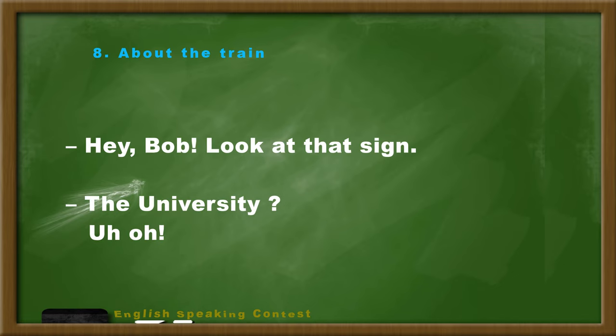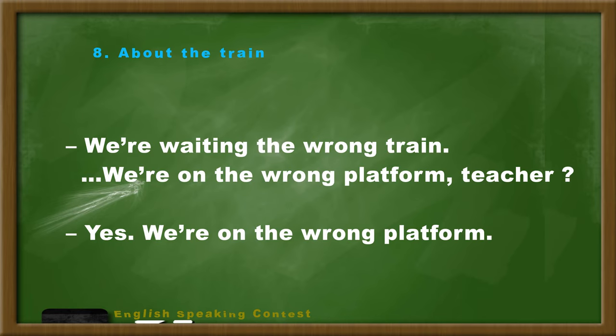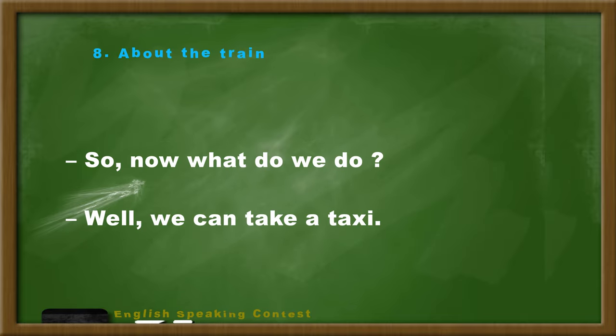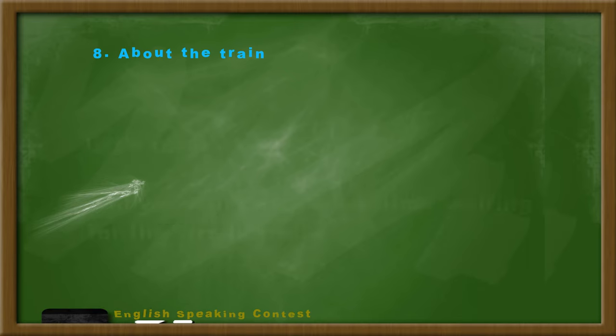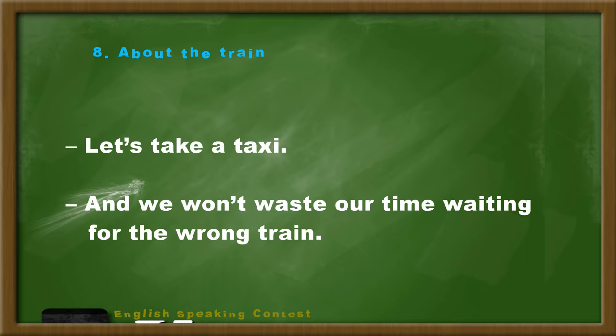Hey, Bob. Look at that sign. The university? Uh-oh. We're waiting for the wrong train. We're on the wrong platform. Yes, we're on the wrong platform. So now, what do we do? Well, we can take a taxi. Taxis are good. Yes, taxis are good. Let's take a taxi. And we won't waste our time waiting for the wrong train.